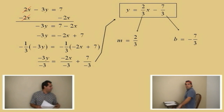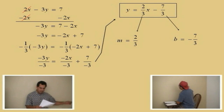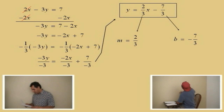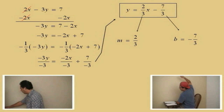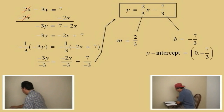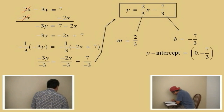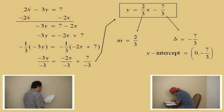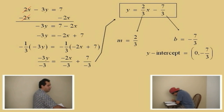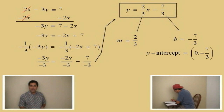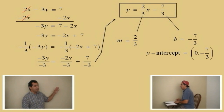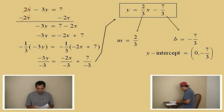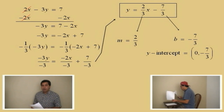What are the coordinates of the y-intercept, Charlie? 0 comma negative 7 over 3. Very good — 0 comma negative 7 thirds. Remember, the y-intercept has the x-coordinate equal to 0. Let's do another one.